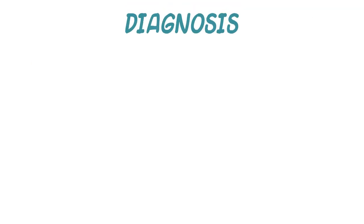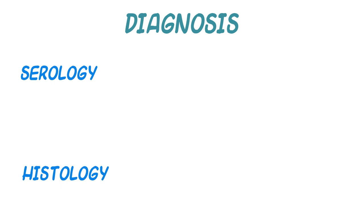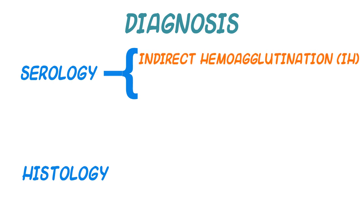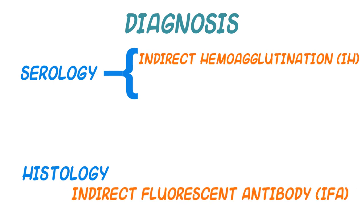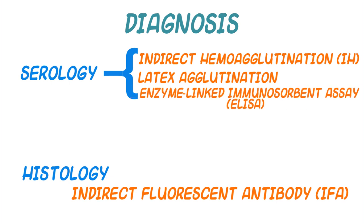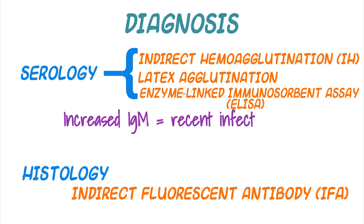The clinical signs of toxo are not particularly specific to the disease, so a definitive diagnosis of toxo generally requires serologic or histologic methods. Immunological techniques in a living animal include indirect hemagglutination assay, indirect fluorescent antibody assay, latex agglutination test, or ELISA. Increased IgM titers are consistent with recent infection, generally less than three months.